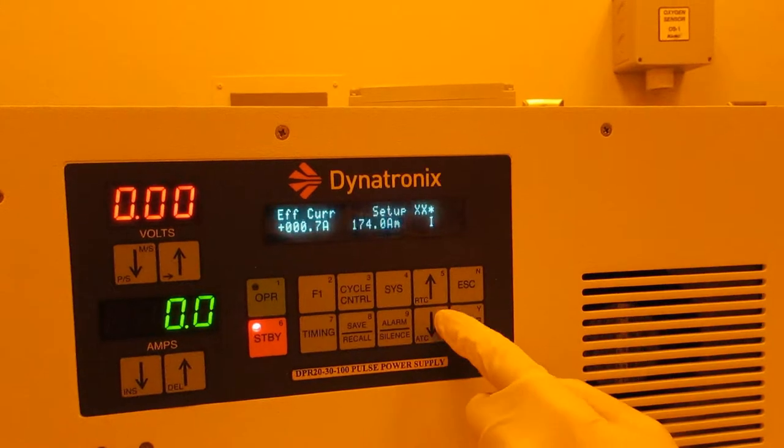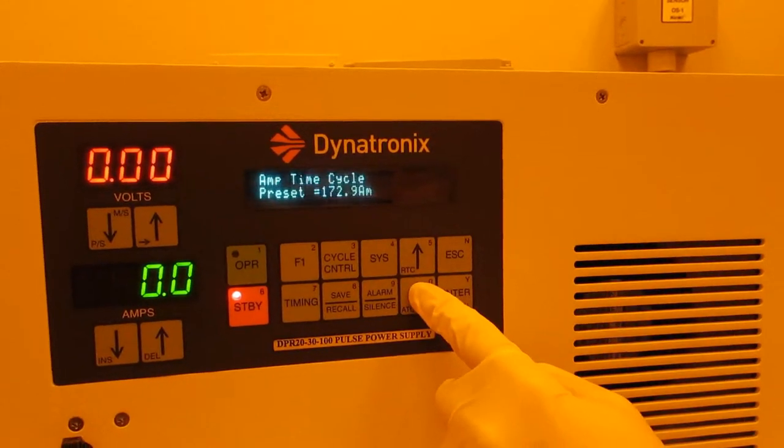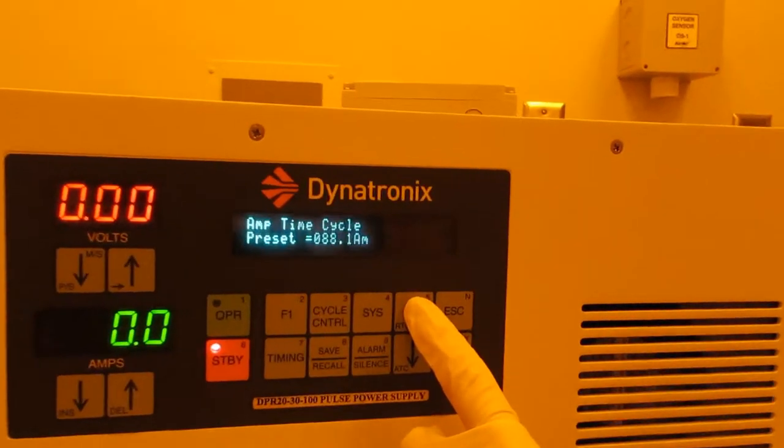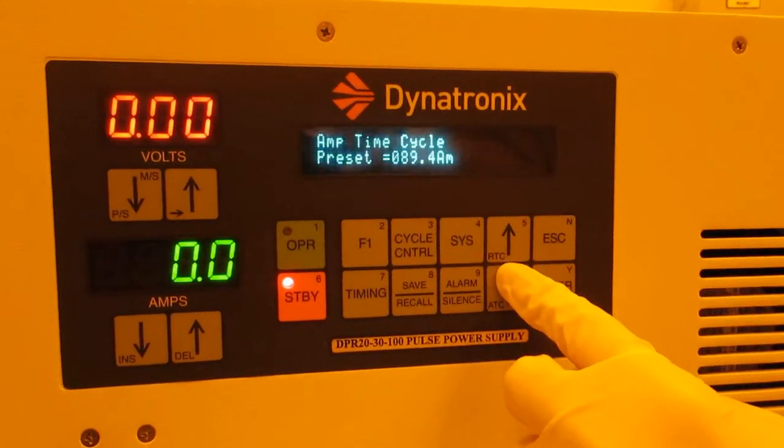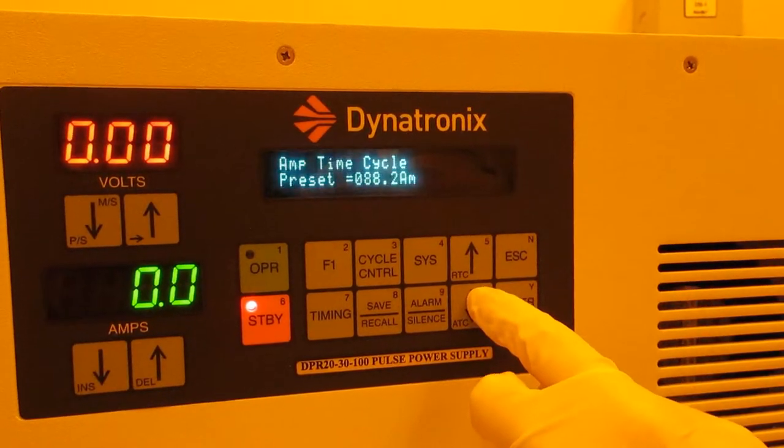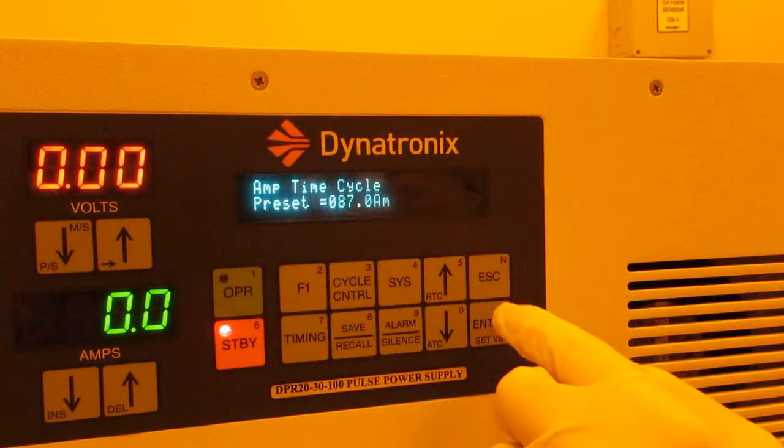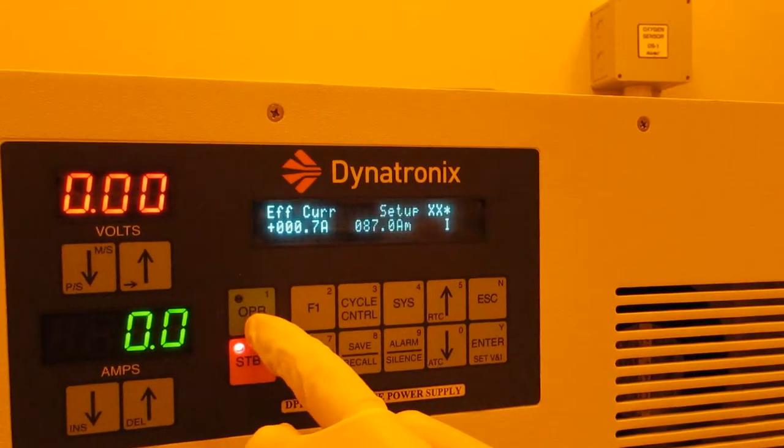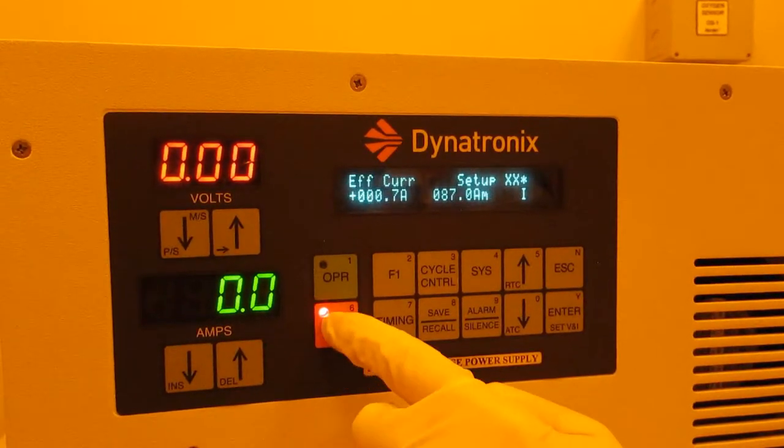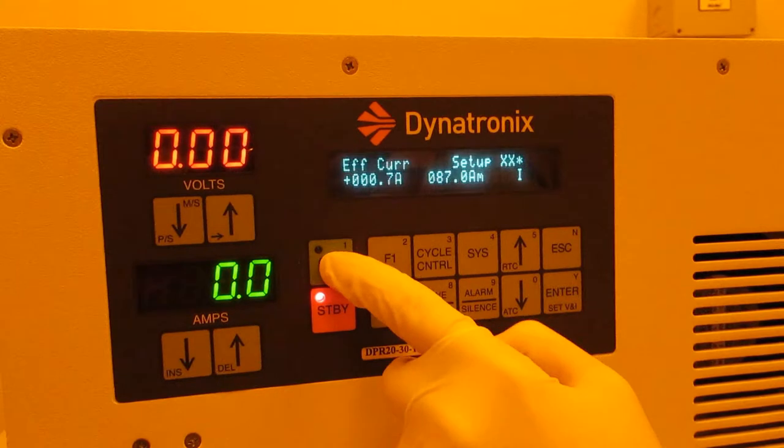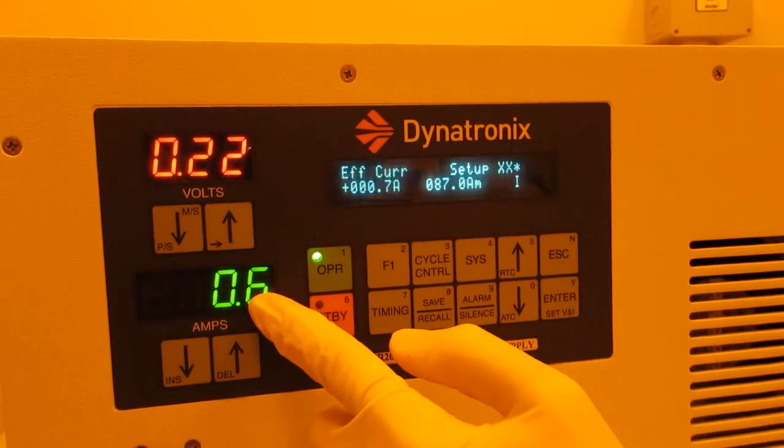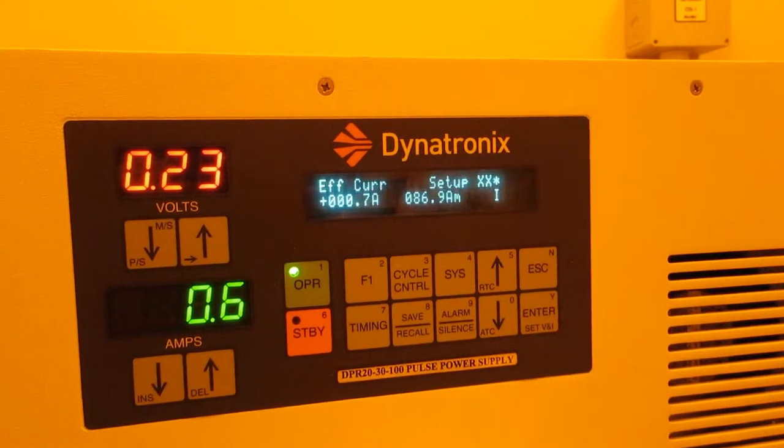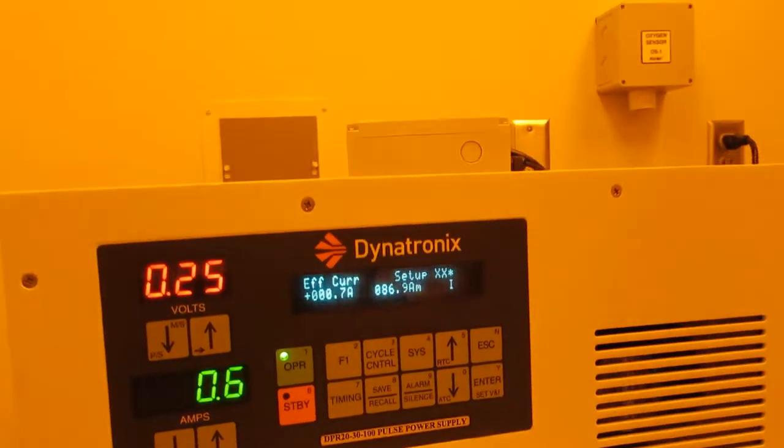Then we're going to set the ATC. So we're going to lower this all the way down to 87. It's very sensitive. Hit enter, escape. And then you hit, this is the standby button, it's on. We want to hit operate. And then you'll see the amps start to go up in the voltage, and it tells you how many amp minutes are remaining. And then your board is currently being plated.